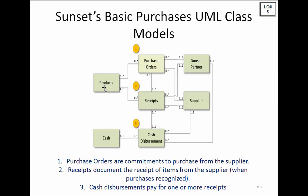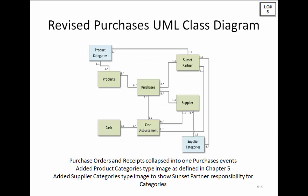This increases the quantity of products on hand. Finally, the last event in the process is paying the suppliers, reducing our cash. We're also adding a couple of type images — we have product categories, and remember that a Sunset partner was assigned to manage each product category.